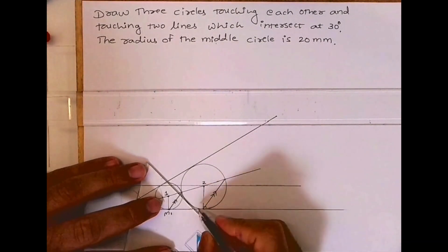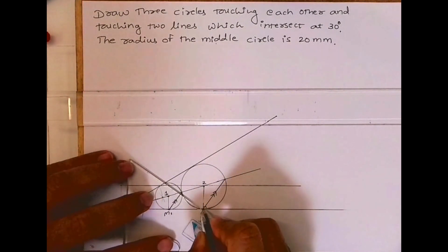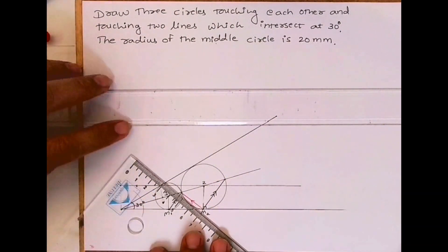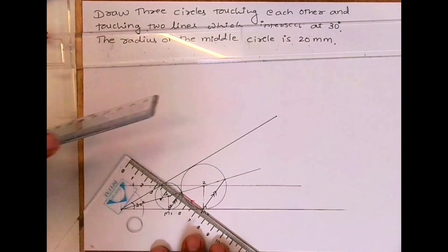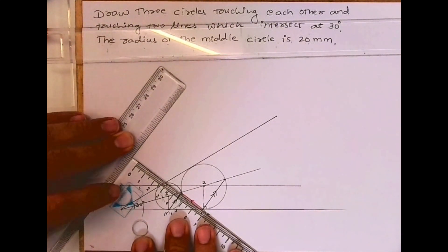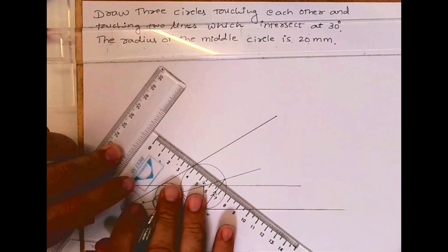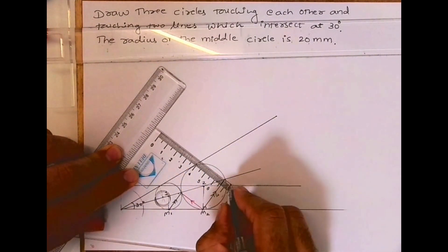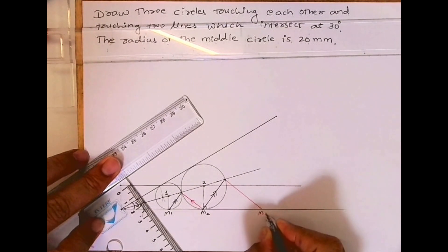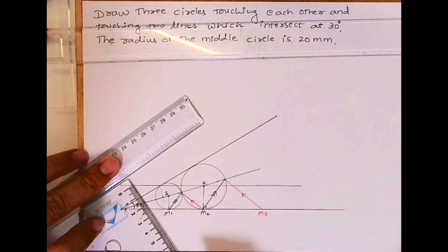In the same way, join this to this. This is not the most accurate method according to tangent. We have another method that we've already done, but this is a parallel method which some schools want, so that's why I'm doing this.